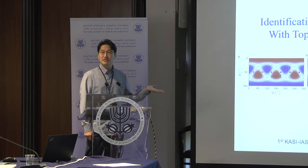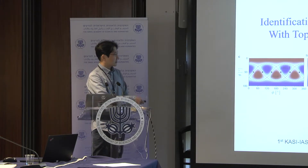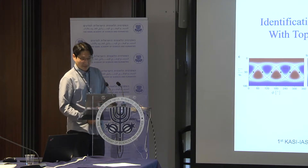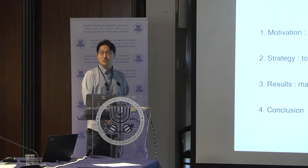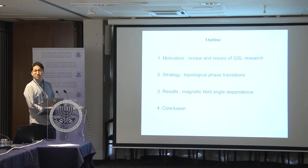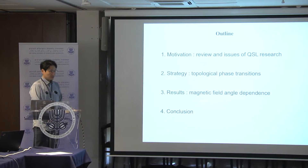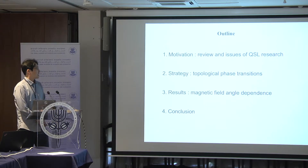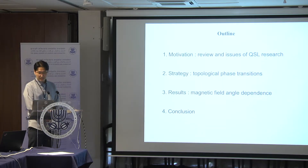This is a theoretical proposal and I also introduce some experimental works. Here is my outline: I first give you the motivation of this work — some review and issues of quantum spin liquid research. Then I'll introduce our strategy to investigate this quantum spin liquid state in quantum magnets. Our strategy is very simple: we use topological phase transitions, focusing on magnetic field angle dependence. Then I conclude.